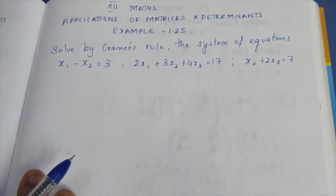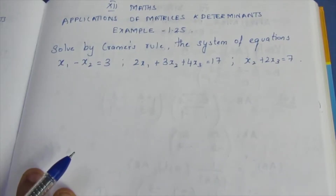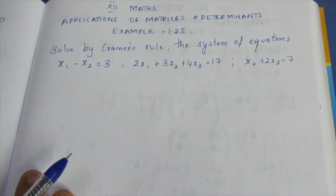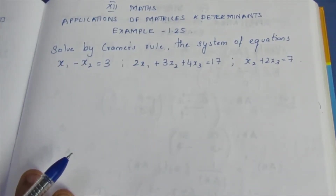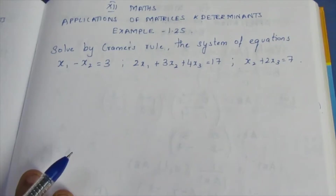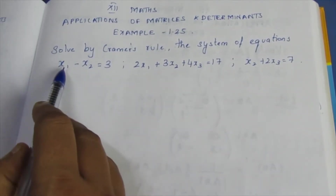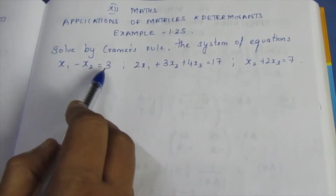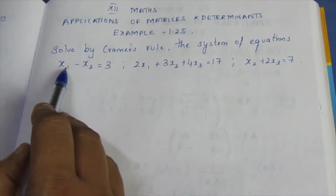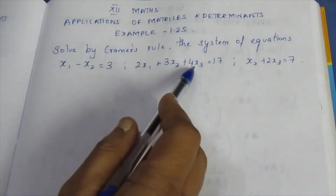Solve by Cramer's rule the system of equations. We will use Cramer's rule to solve it. There are 3 variables: x1, x2, x3.